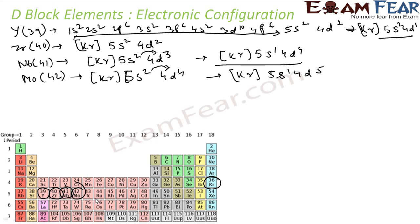Okay, the next is Tc, technetium. Tc is 43. 36 in krypton will take care of 36, 2 with s for 38, and then 5 remaining, 4d5.